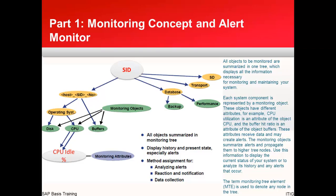These objects have different attributes — for example, CPU has idleness, buffer has hit ratio. These attributes receive data and may create alerts. The monitoring object summarizes alerts and propagates them to higher tree nodes. We use this information to display the current status of your system or to analyze its history and any alerts that have occurred. The term Monitoring Tree Element (MTE) is used to denote any node in the tree.